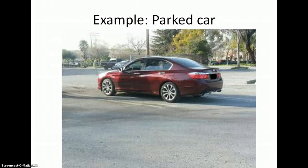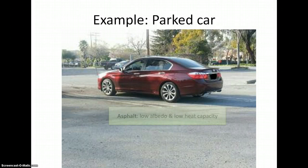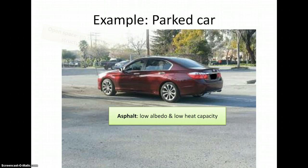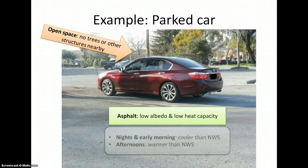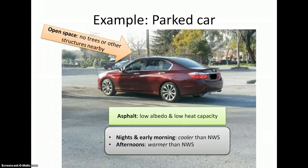Next, let's look at a car in a parking lot. This car is parked on a low albedo, low heat capacity asphalt. The area is open so there is no restriction of air flow. Overall, we would expect this area to be somewhat cooler than the National Weather Service in the early mornings because of the low heat capacity materials, but much warmer than the National Weather Service in the late afternoon because of the low heat capacity, low albedo materials which heat up quickly.